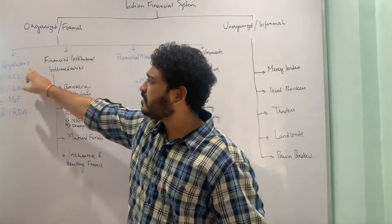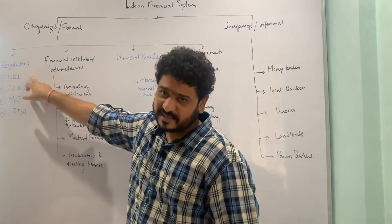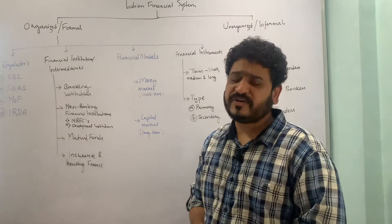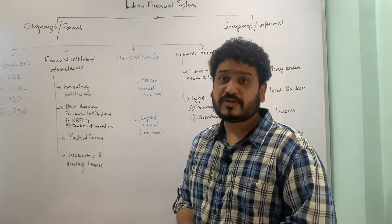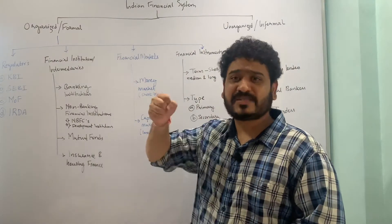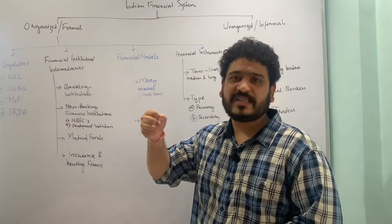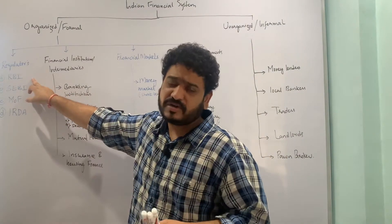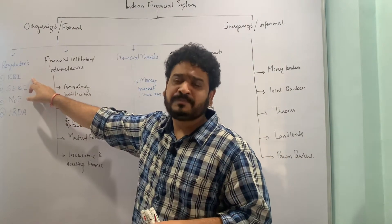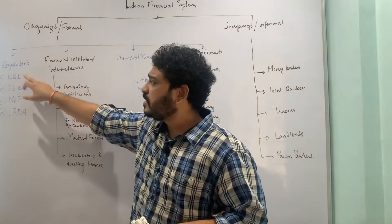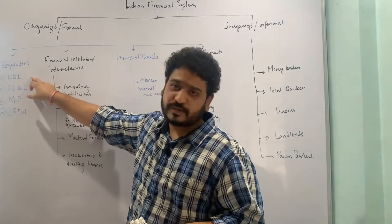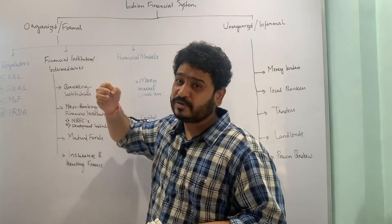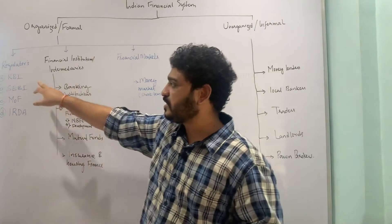What are the different types of regulators in the Indian financial system? The first regulator is the Reserve Bank of India, which is also the Central Bank of India or the Apex Monetary Authority in the country. On the contrary, the US has the Federal Reserve. So this is the apex monetary institution as far as the Indian financial system is concerned.